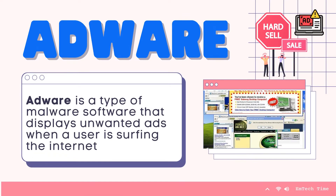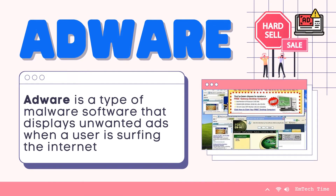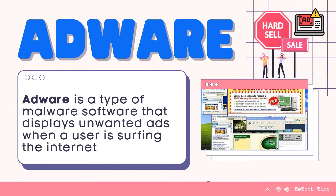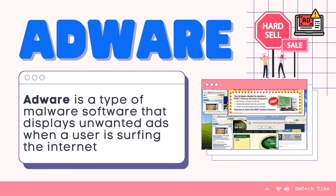The second one is adware. It is a type of malware software that displays unwanted ads when a user is surfing the Internet. The ads often redirect your searches to advertising websites and collect marketing-type data about you behind your back, which is considered malicious.